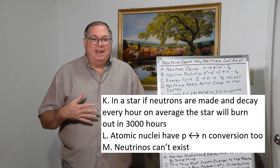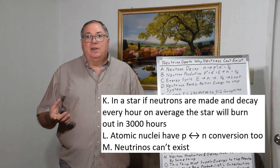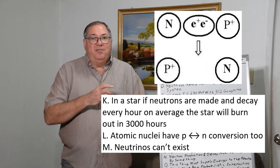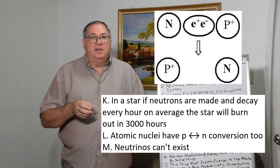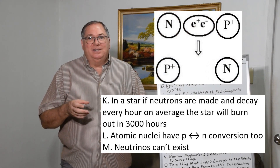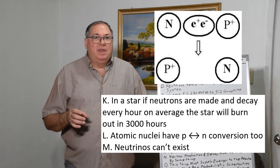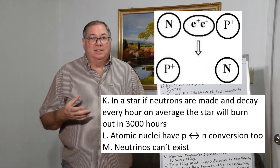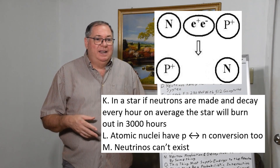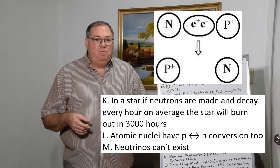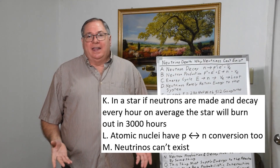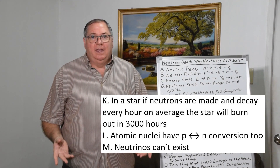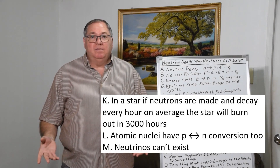Neutrino theory doesn't make sense when you consider this. Even in an atomic nucleus, protons and neutrons are always changing position — proton turns into neutron and back — because they're exchanging particles, or quantum fluctuations are causing the conversion. According to neutrino theory, atoms would vanish after a few hours. So neutrinos just flat out can't exist: they violate the principle of conservation of energy, and there's no mechanism to supply that energy to them. The energy has to come from somewhere else.